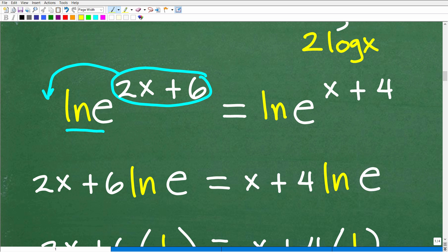So here, once I've taken a logarithm of both sides, I can now move this whole exponent expression right in front of the ln e. So that's what I'm doing right here. So I have 2x plus 6 times ln e, and then this right here, this x plus 4, I can move down right here in front of the ln e. Again, that's that property of logarithms.